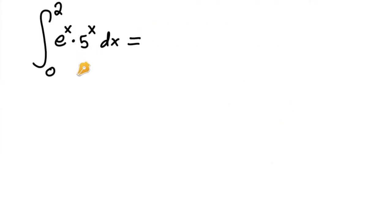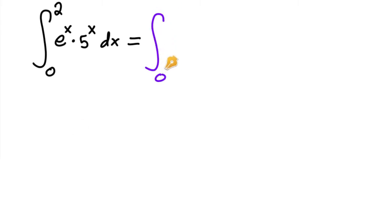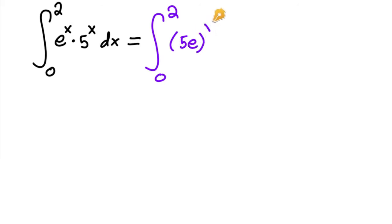This next one at first glance looks incredibly confusing — how could you possibly find the antiderivative of a product with what we know so far? But there's a little workaround: you can rewrite e to the x times five to the x as five e, all to the x. This is exactly the same thing.